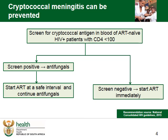So how do we help Mr. ZZ not get sick? This is a simplified algorithm that gives an overview of our approach to the prevention of cryptococcal meningitis. First, we have to screen all patients with a CD4 under 100 for cryptococcal antigen in the blood. Those patients who are cryptococcal antigen positive can be treated with antifungals, which will dramatically reduce the possibility of the disease progressing to cryptococcal meningitis and disseminated disease.